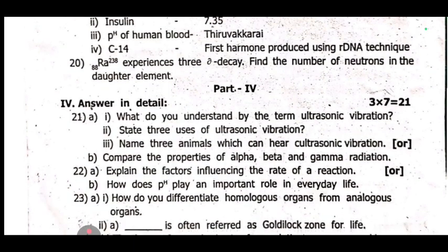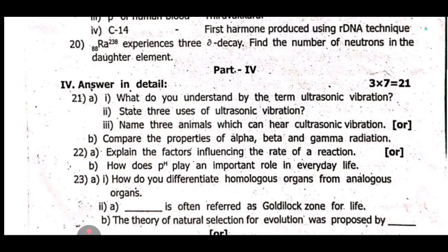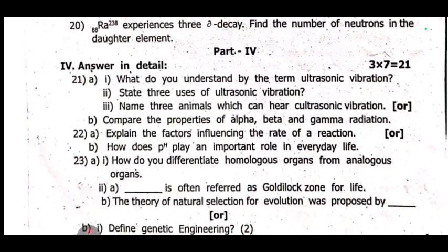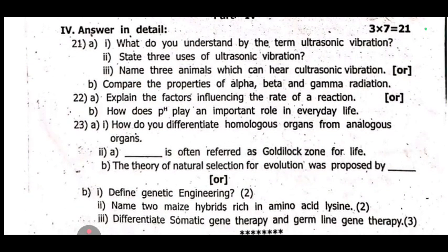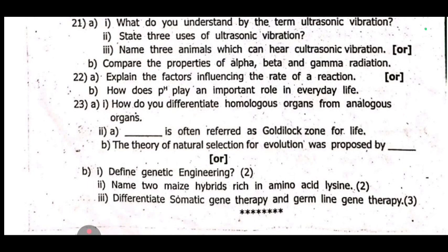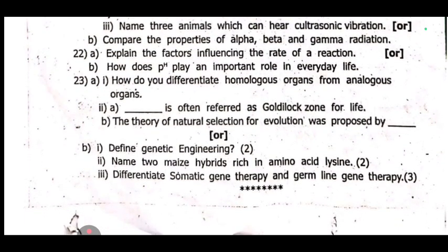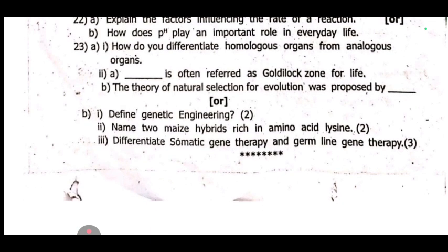Twenty-second: explain the factors influencing the rate of reaction, or how does pH play an important role in everyday life? Twenty-third: how do you differentiate homologous organs from analogous organs? The Goldilocks zone for life — the theory of natural selection for evolution was proposed by whom? Differentiate somatic gene therapy and germline gene therapy.